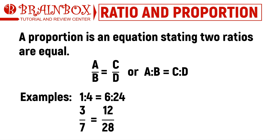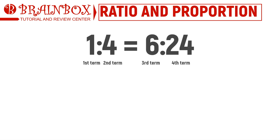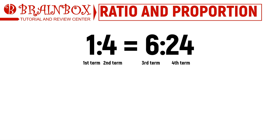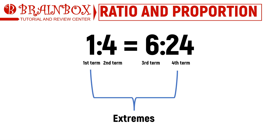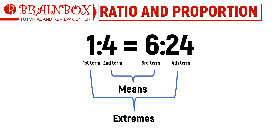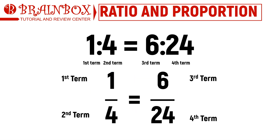The numbers that comprise a proportion are called terms. The first and fourth terms are called extremes, since they are located at the outer portion of the proportion written in colon notation. The second and third terms, located at the inner portion, are called the means. This is how it appears when written in fraction notation.